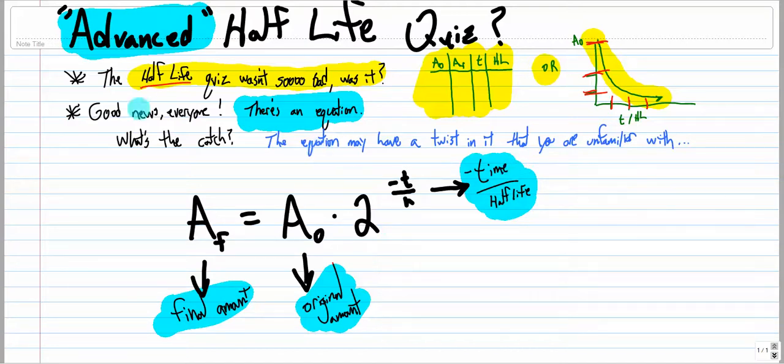The catch, in my mind, is that I don't know where you freshmen are in your math classes, but this equation, that negative t over h power thing, that might be a twist that you're unfamiliar with.